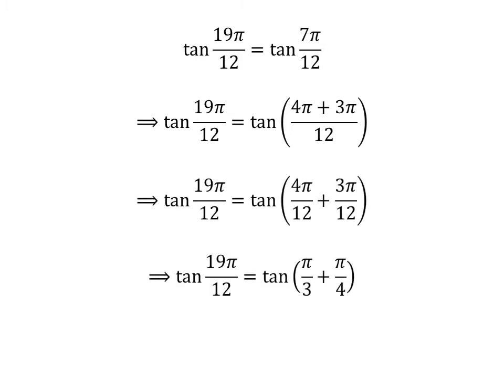Following the above steps, we get tangent of 19 times pi upon 12 is equal to tangent of pi upon 3 plus pi upon 4.